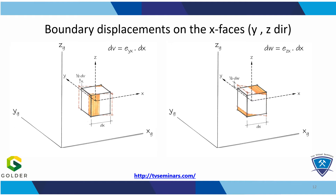You multiply that strain by dx, by the length of the model in the x direction, and they result in deformations or displacements into the y direction and the z direction that the x face is going to undergo. Keeping the centroid in the center, half of the displacement is applied to one face and the other half to the other face in the opposite direction.